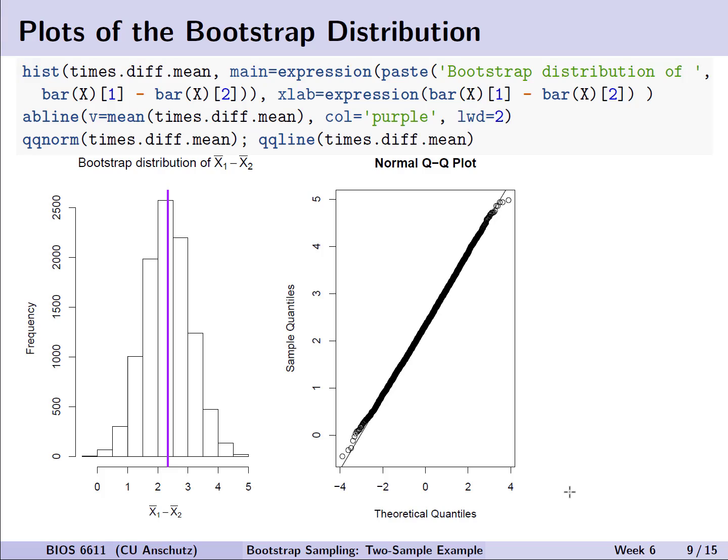So here we can look at some plots of our bootstrap distribution, and we can make some connections to some of the things we do know are true based on some of the theory underlying our estimates. For example, we know the sample means are approximately normally distributed, even if the underlying distribution is not, by the central limit theorem. Although we may be concerned about estimating the confidence interval, depending on how normal we feel it is and what the sample size is.